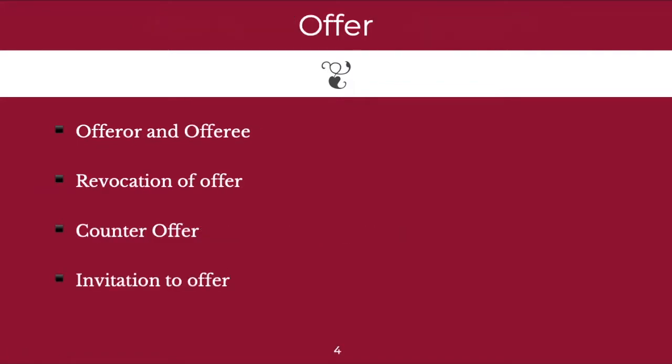Now let's look at each of the individual terms. What is an offer? Now for any offer to be legally valid, there must be an offerer, or the person who is making the offer, and there must be an offeree, or the person to whom the offer is made. Now when the offerer makes an offer to the offeree, the same fulfills the first criteria under the Indian Contracts Act.